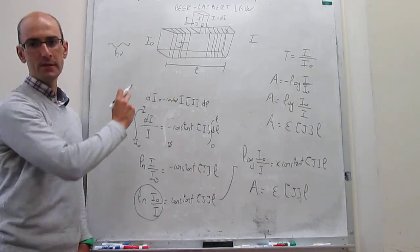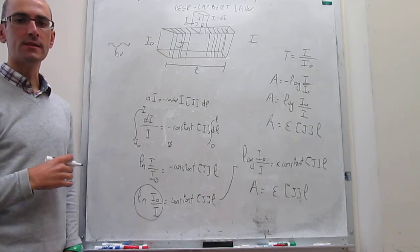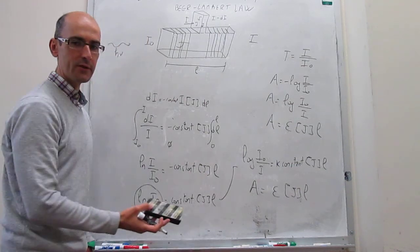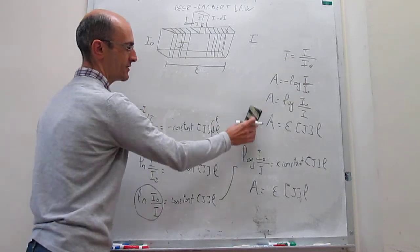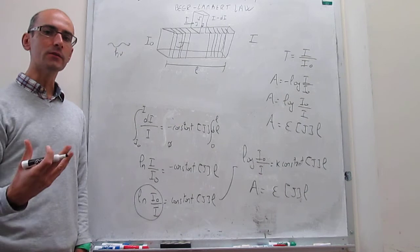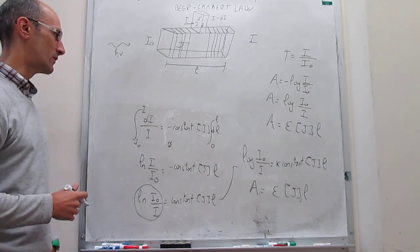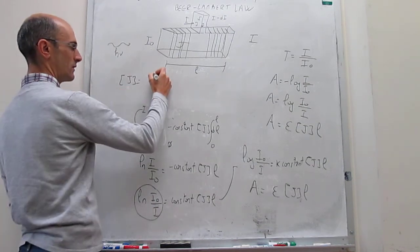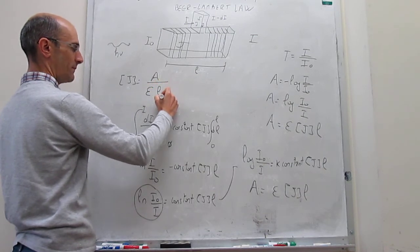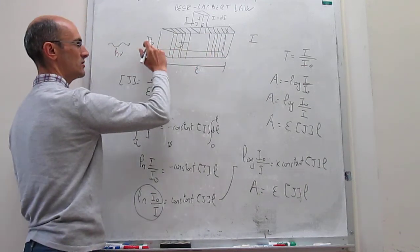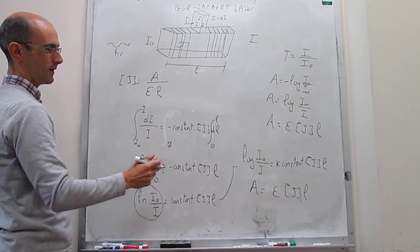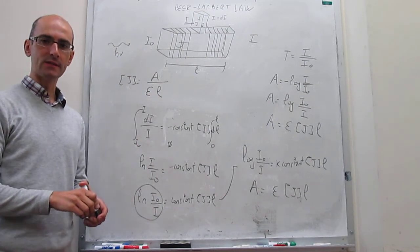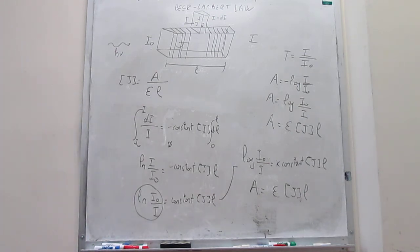By examining how the experiment takes place — how photons are absorbed and what the decrease in intensity depends on — we've been able to derive the Beer-Lambert law from scratch. The Beer-Lambert law is used for quantification purposes: it's very good for determining how much solute you have in your experiment. You can rearrange the Beer-Lambert law to solve for the concentration of your active species: c = A / (ε · l). You just measure how much the intensity changes, take the base-ten log to get the absorbance, then divide by the molar absorptivity and the path length.